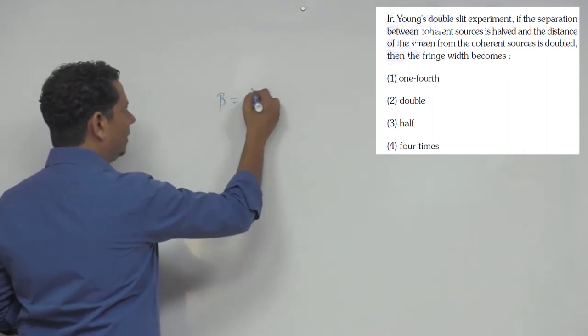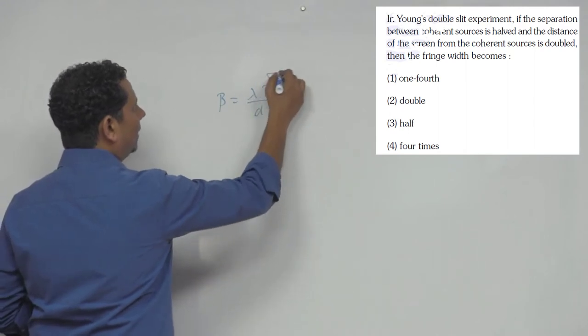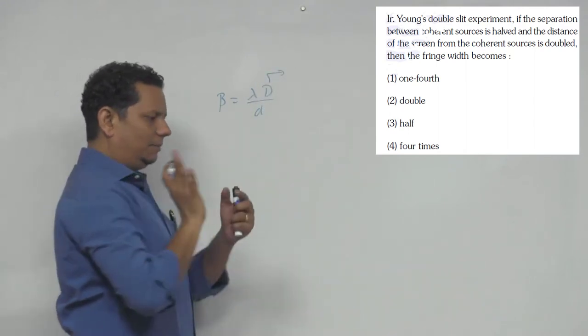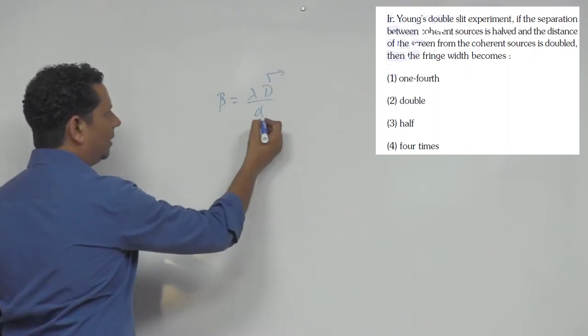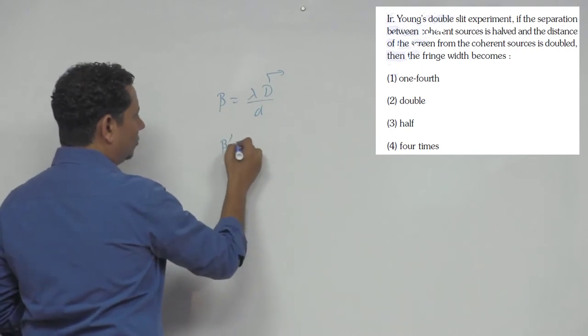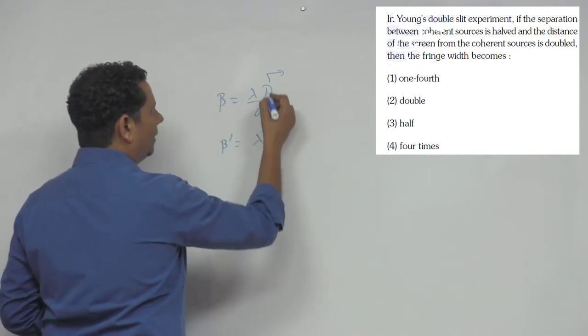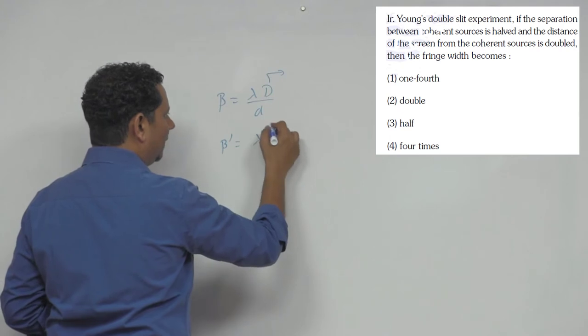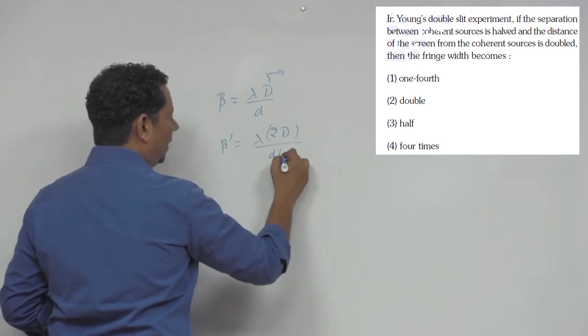Beta equals lambda D by d, where D is the screen distance and d is the separation between the two slits. So beta dash will equal lambda times 2D divided by d over 2.